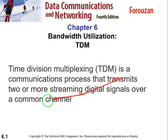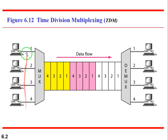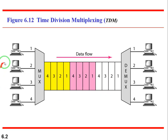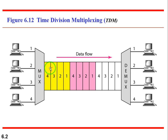TDM is a digital multiplexing technique for combining several low-rate digital channels into one high-rate channel. The MUX is going to combine low-rate channels and transfer data into one high-rate channel through a single channel. The high-rate channel carries data from all the low-rate channels.